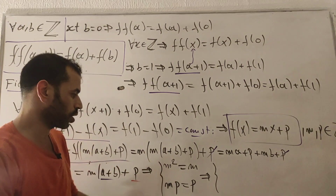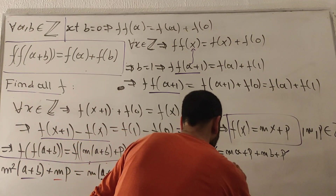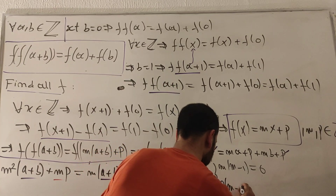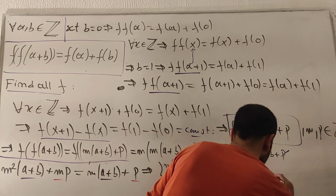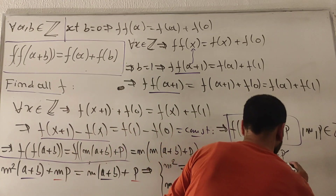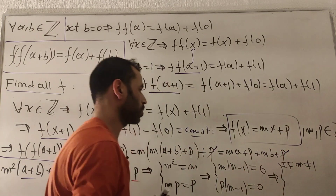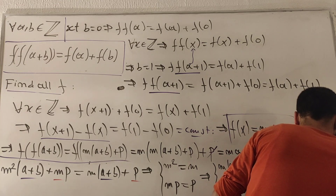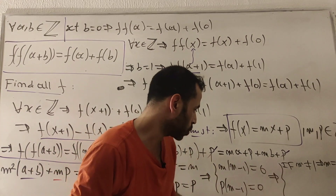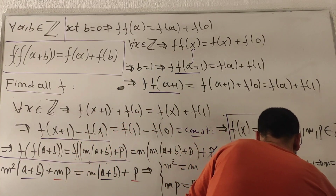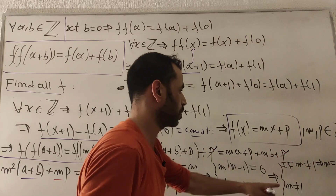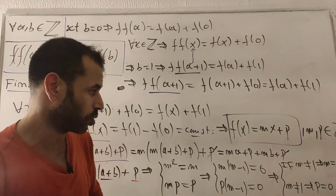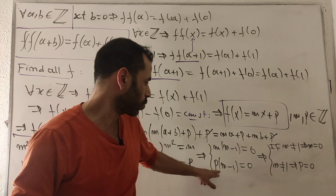Factoring: m(m-1) = 0 and p(m-1) = 0. Case 1: if m ≠ 1, then m-1 ≠ 0, so m = 0 from the first equation, and p = 0 from the second. Case 2: if m = 1, then m-1 = 0, satisfying both equations regardless of p.